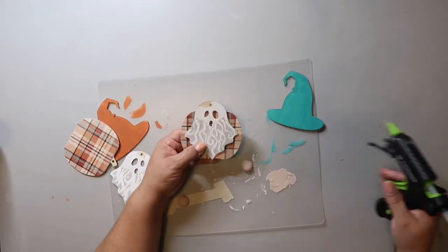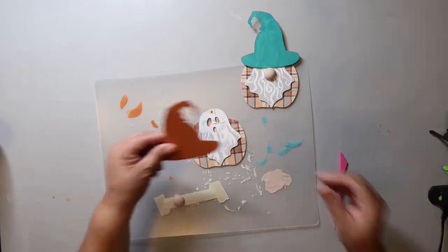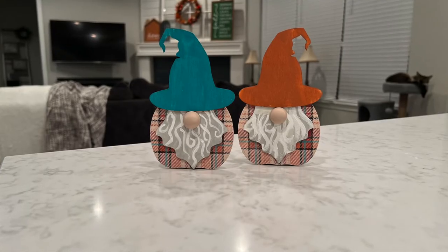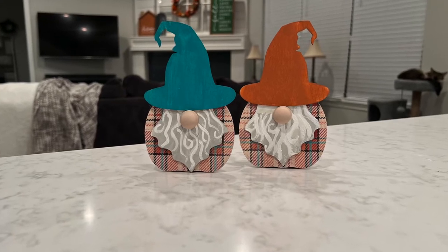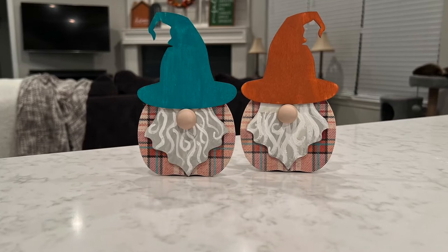The last step is to glue everything together and drum roll. It's a gnome. These turned out super cute, and you could customize them to every season or color decor that you have in your home.